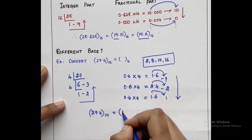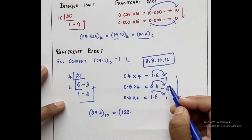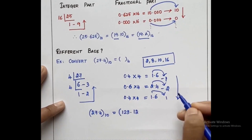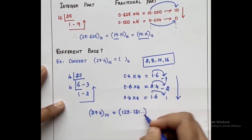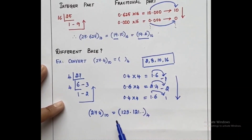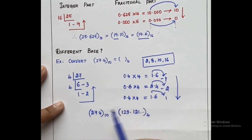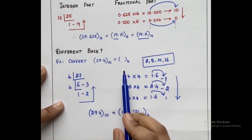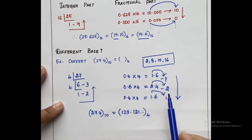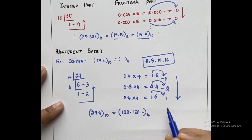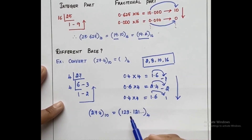For 27.4, the integer part gives us the value 123, and the decimal part gives us 1 2 1, so the result is 123.121 to the base 4. This is the equivalent value for the given number. This is how we convert when a different base is provided. In competitive exams, if you encounter questions with a non-standard base, you can solve them in this particular way to get the required answer.